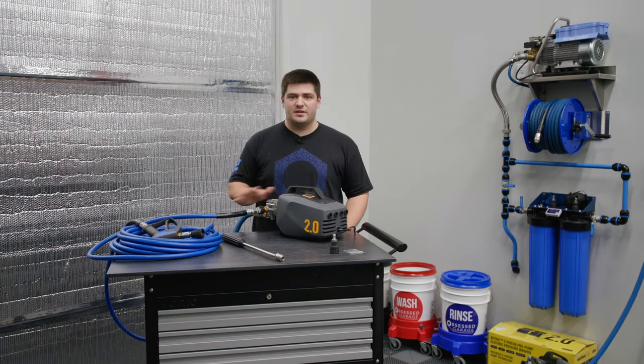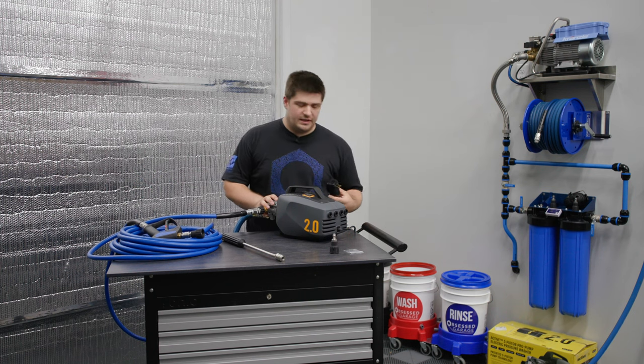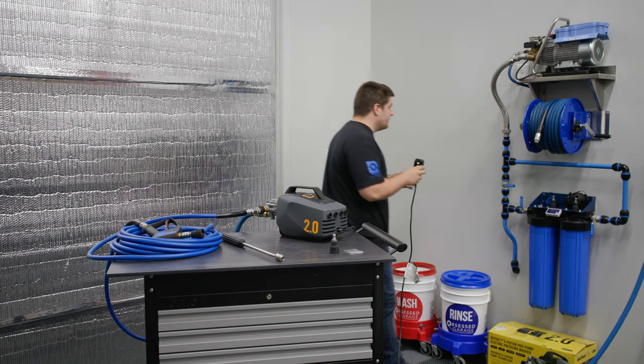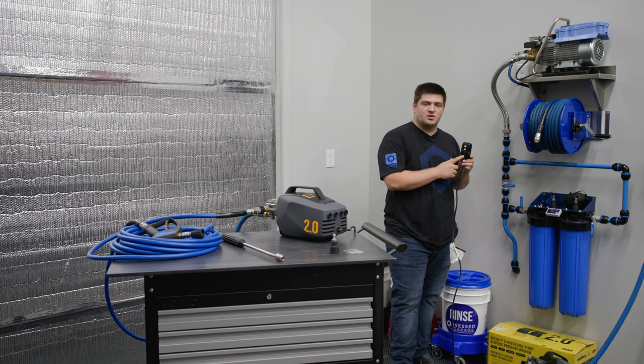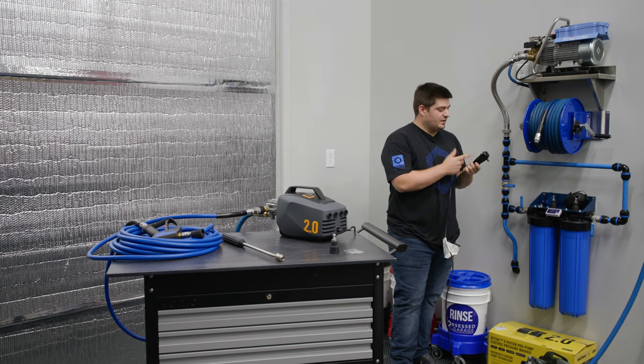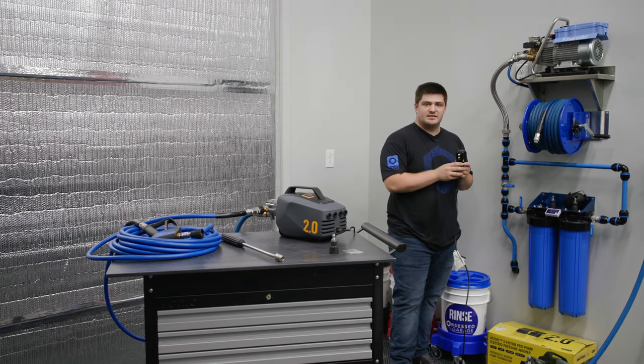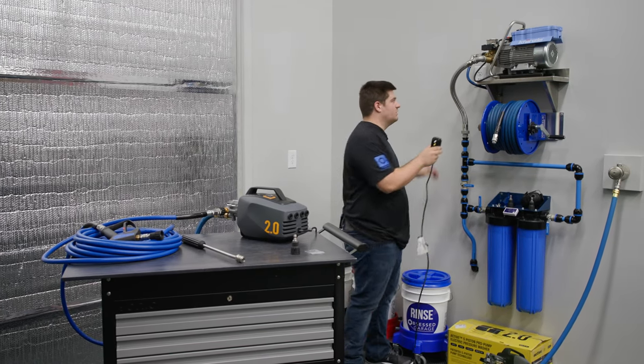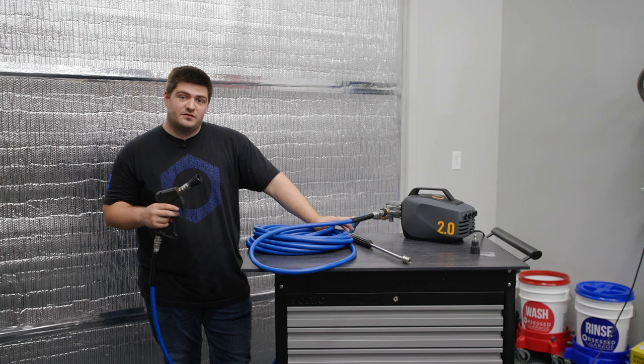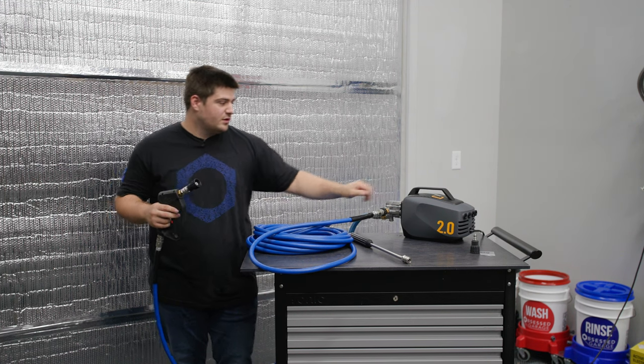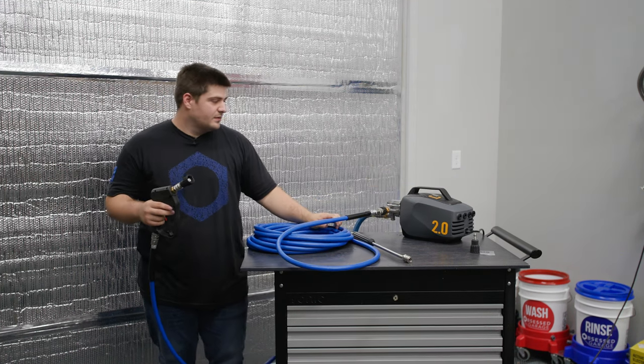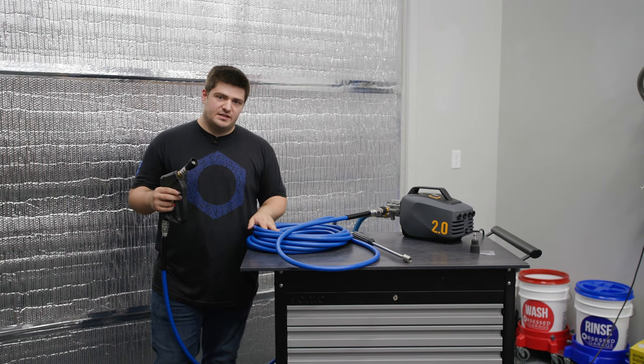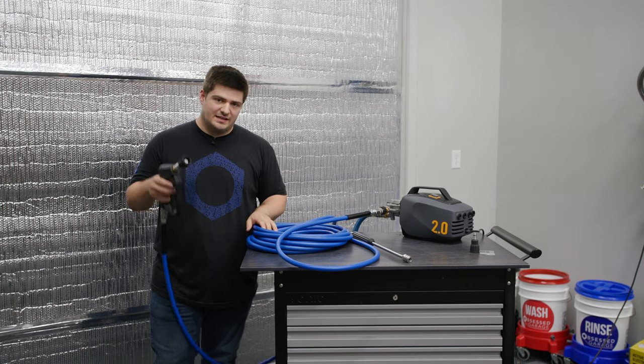All right, now that we've ensured there's no leaks in the system, we can go ahead and plug it in. Now most if not all pressure washers will come with a GFCI plug. Basically what this means is if any water gets in there or there's any sort of short, it will turn the pressure washer off. Now that our hose is free from air, we're ready to turn the unit on. And just like that, the hose and gun is pressurized and ready to use and we're ready to start testing.